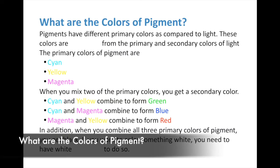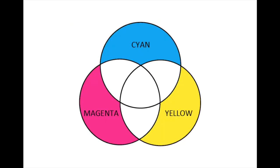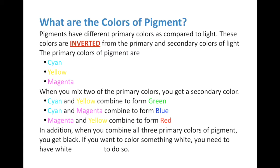Now let's look at the colors of pigment. Pigments have primary colors that are different compared to light - they're essentially the opposite or inverted from the primary and secondary colors of light. The primary colors of pigment are cyan, yellow, and magenta. We use a system called CMYK: cyan, yellow, magenta, and black. These are 100% cyan, 100% yellow, and 100% magenta pigment - which if you've ever looked at a color printer and seen the individual ink tanks pulled out separately, you'll recognize these colors.